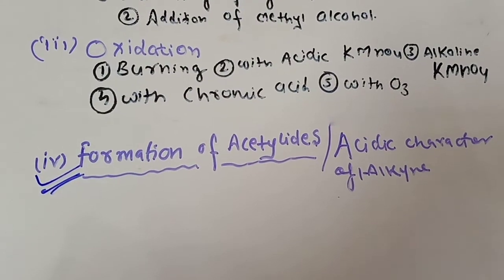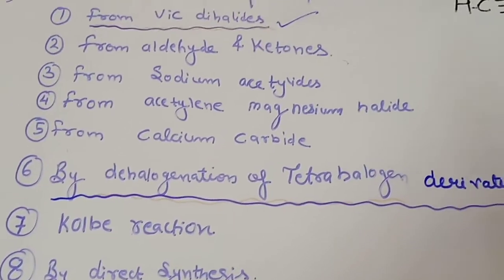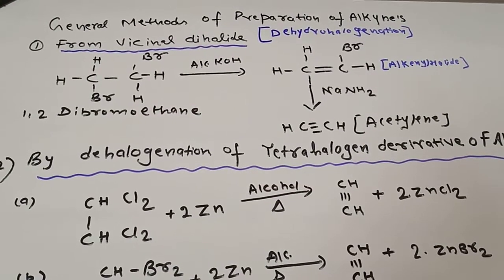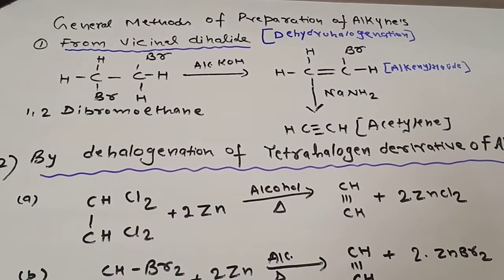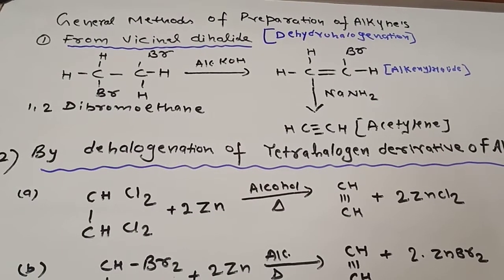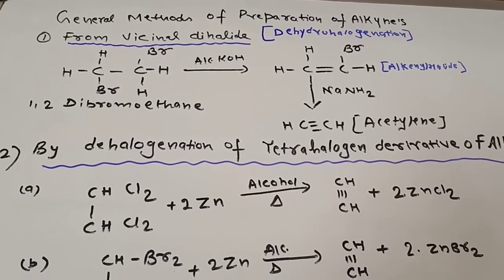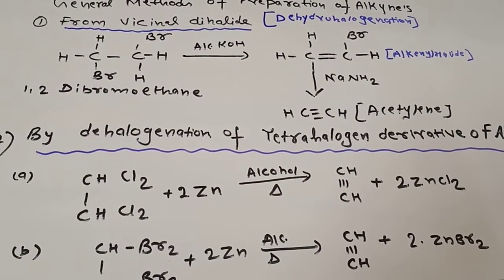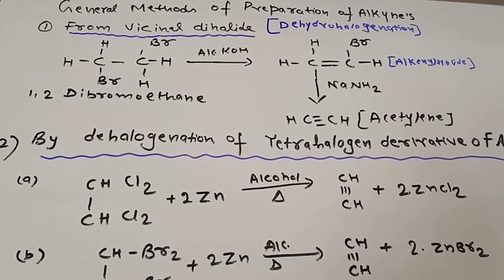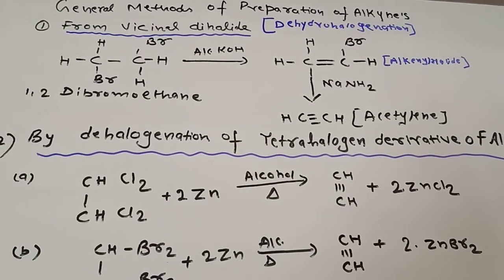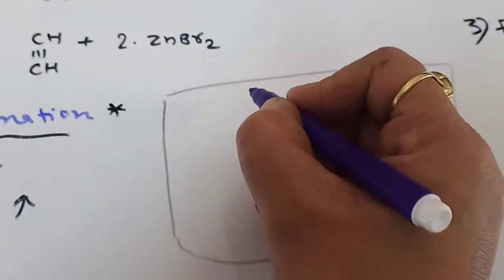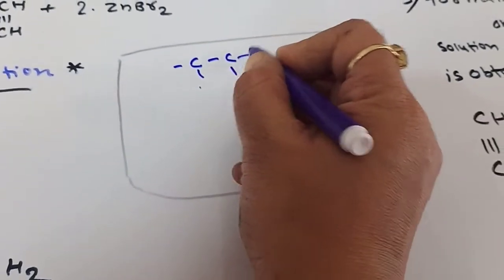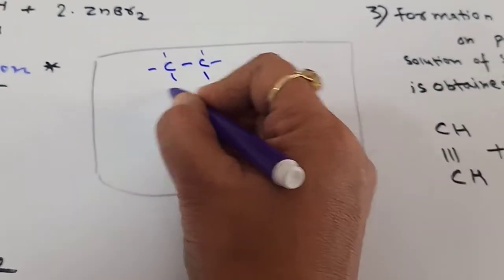Now let us discuss in detail the general preparation methods — first from the vicinal dihalides, and second by the dehalogenation of the tetrahalogen derivatives of alkynes. This video is prepared according to the syllabus. The first method is from the vicinal dihalides. When we have two carbons and the halogen atoms are present on adjacent carbon atoms — for example, Cl and Cl on adjacent carbons — this type of dihalide is termed a vicinal dihalide.